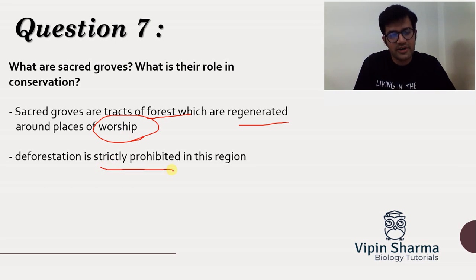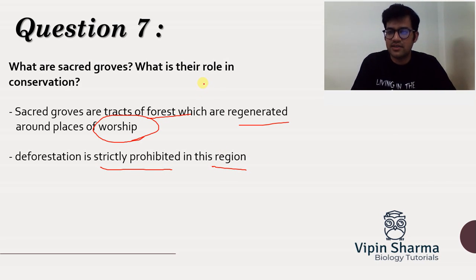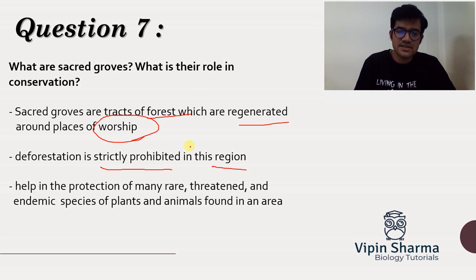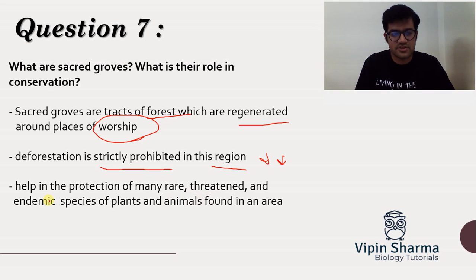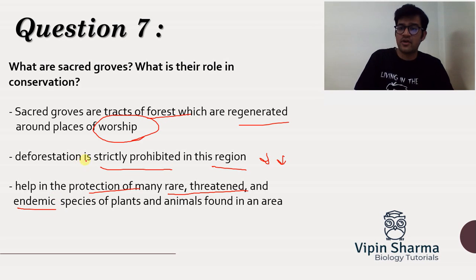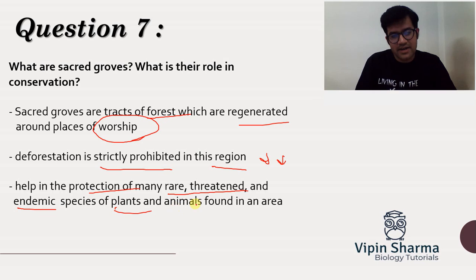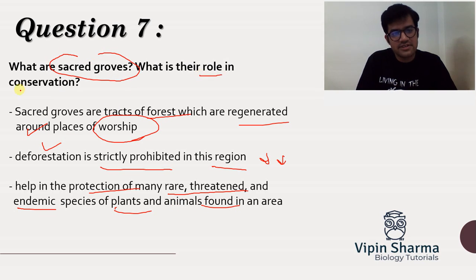Deforestation is strictly prohibited in sacred grove regions as they are conserved by religious views and community rules. This directly helps in conservation of many other species — there are species which live on these plants, and the natural habitat is not cut. If the natural habitat is safe, the species residing in these areas are also safe. Sacred groves help in protection of rare, threatened, and endemic species.